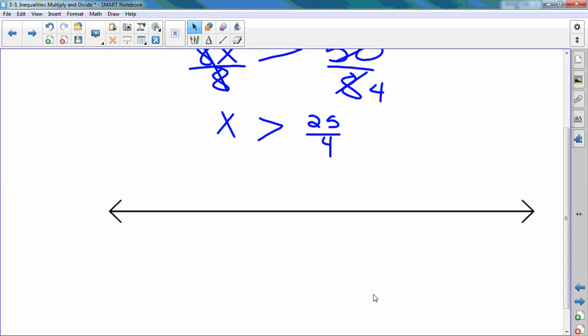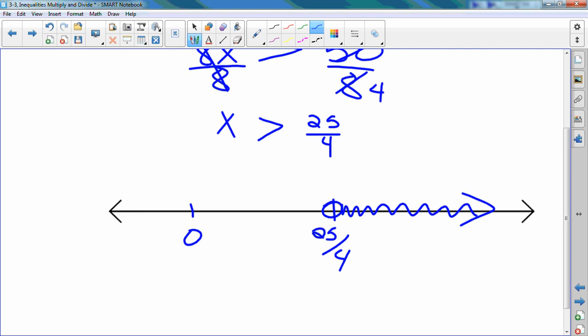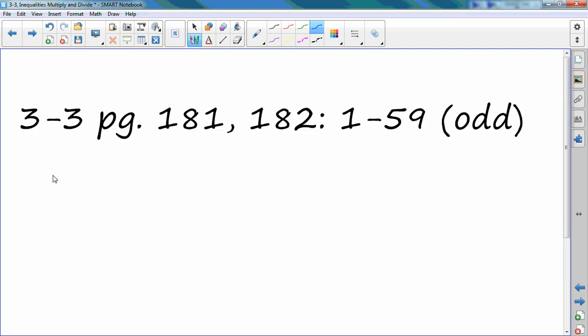My variable is already on the left. So, I put 25 over 4. Does it even matter if I don't know exactly what that number is? No. Because when I graph, I just know it's positive and it goes to the right. Open dot, going that way. So, once again, tomorrow we'll do this in class.